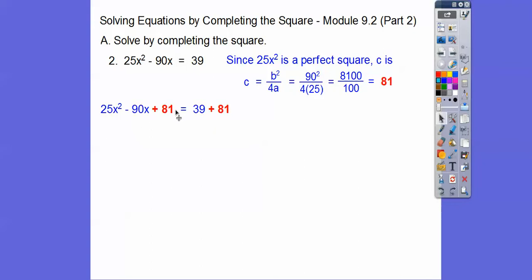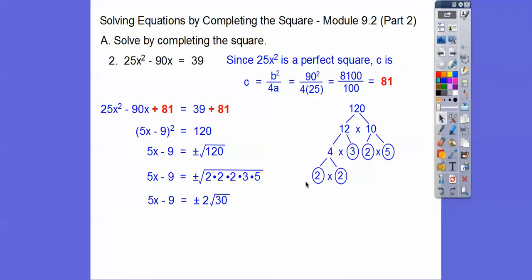So this becomes a 5x minus 9 squared over here. And then when we add those together, we get 120. So 5x minus 9, don't forget, it equals plus or minus the square root of 120. And then 120, I've done that over here. So it equals 2 root 30 and then add 9 to both sides. So here we go. And then we're going to divide by 5. And so there's our answer right there.